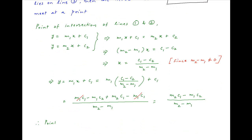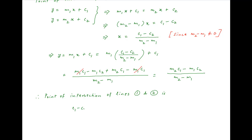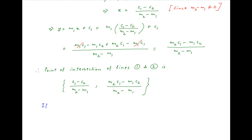Therefore, the coordinates of the point of intersection of lines 1 and 2 are: x equals c1 minus c2 upon m2 minus m1, and y equals m2c1 minus m1c2 upon m2 minus m1. For the three lines to meet at a point, this point of intersection must satisfy the equation of line 3, which is y equals m3x plus c3.